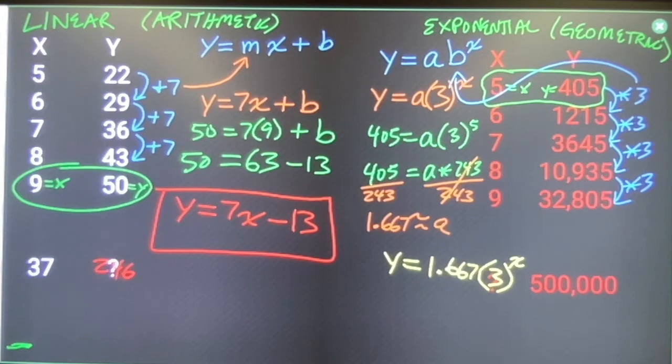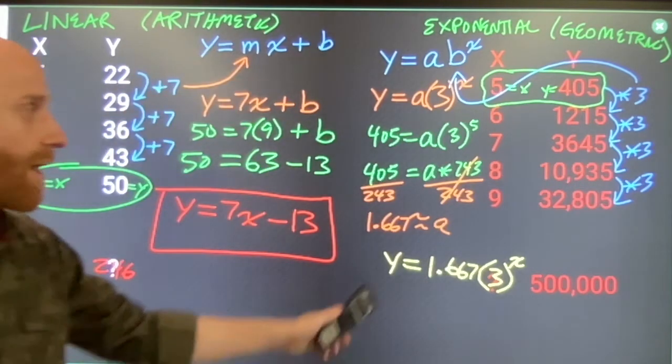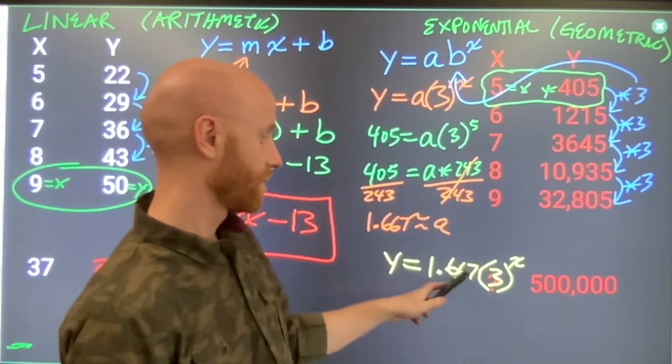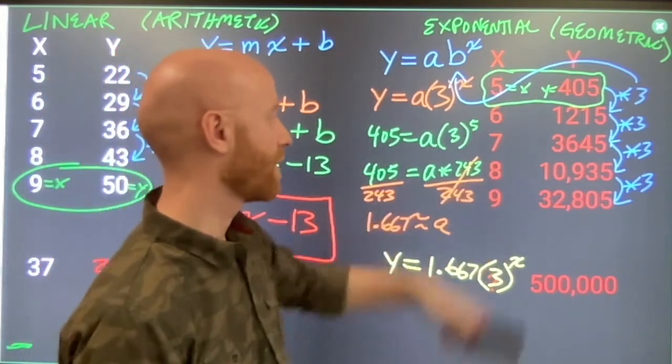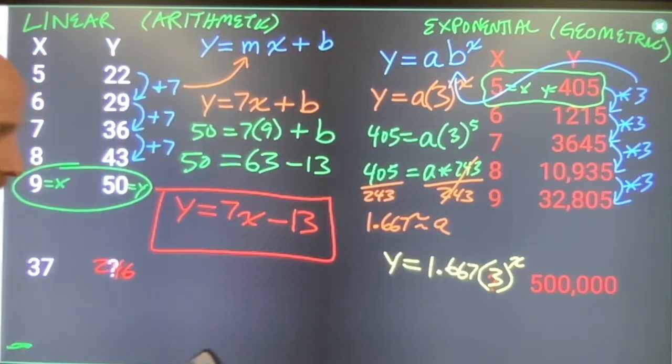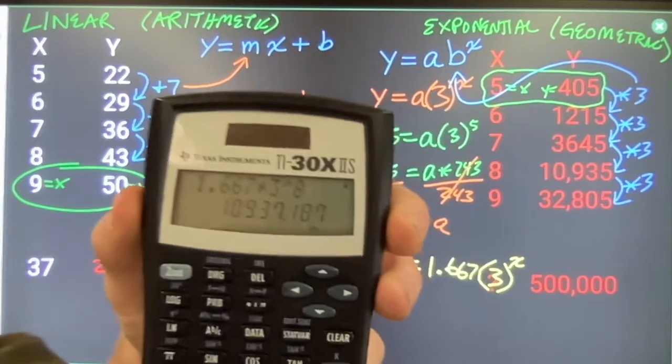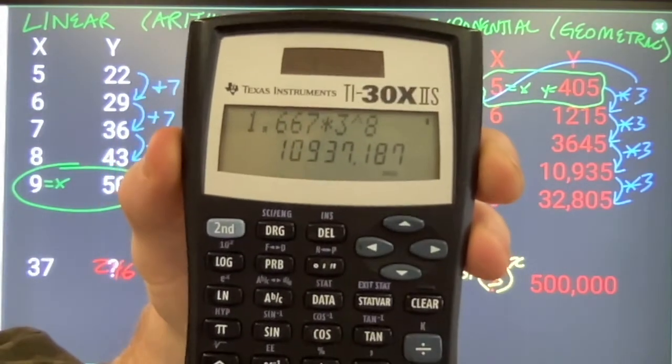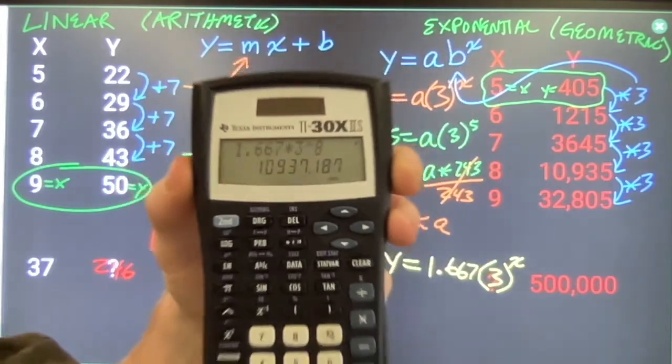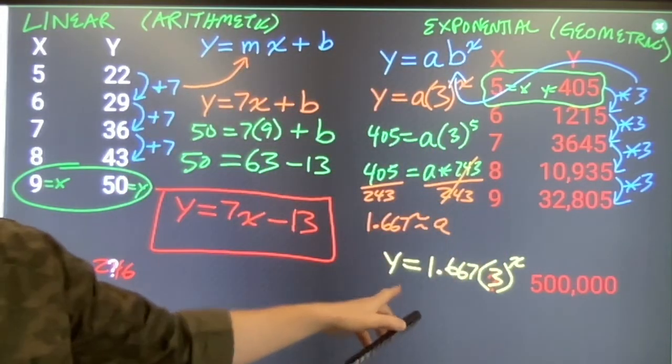That's the formula. And then I can use it to find any of these things. Now, I'm going to be a little bit off because I rounded. But no problems. If I wanted to check, does this really work? Let me try it with x equals 8. 1.667 times 3 to the 8th power. 10,935 is what I'm supposed to have. 10,937 is what I get with my rounded answer. It's close.